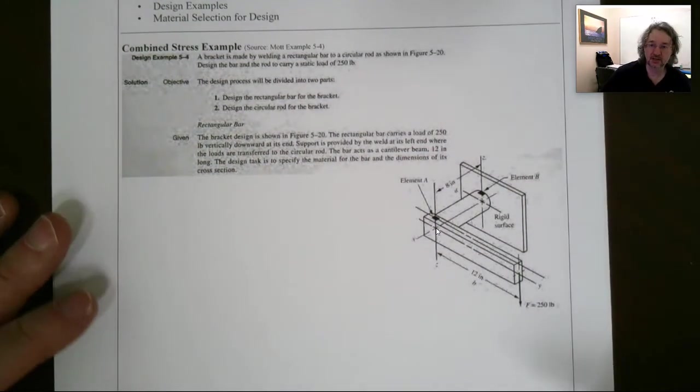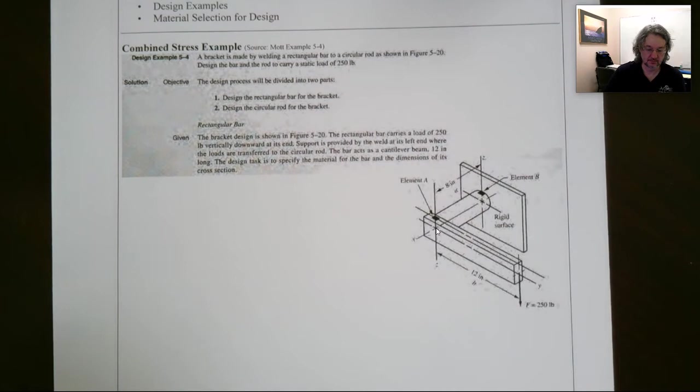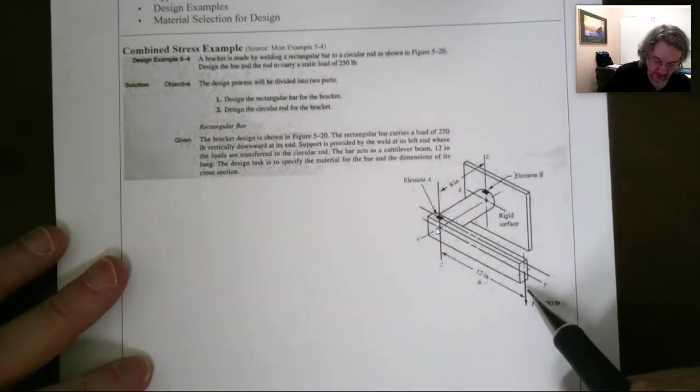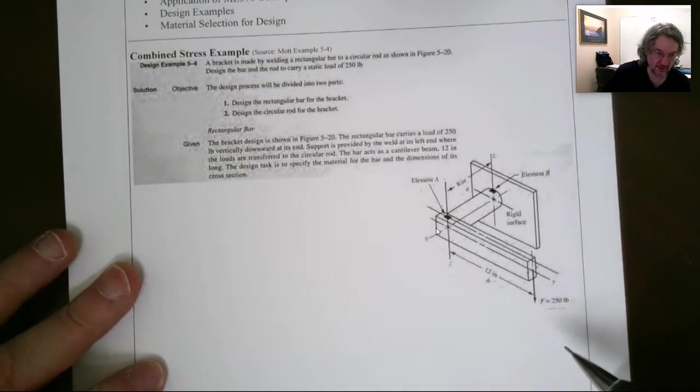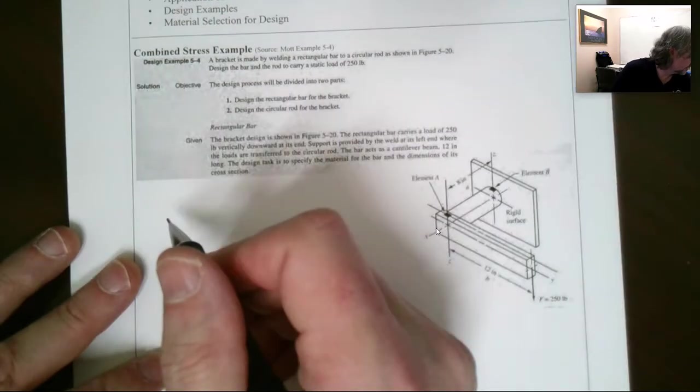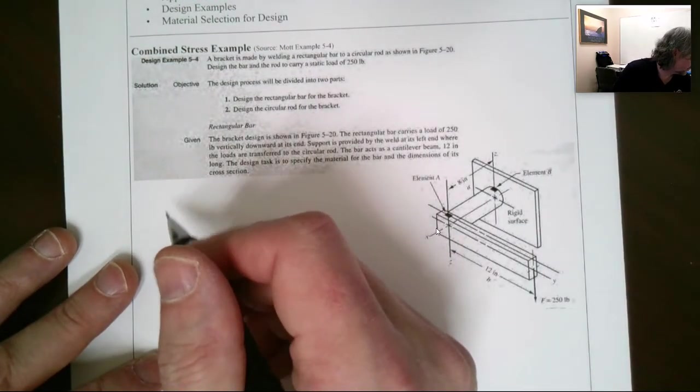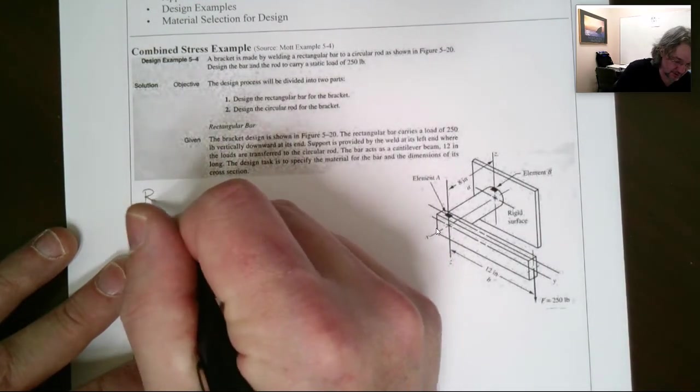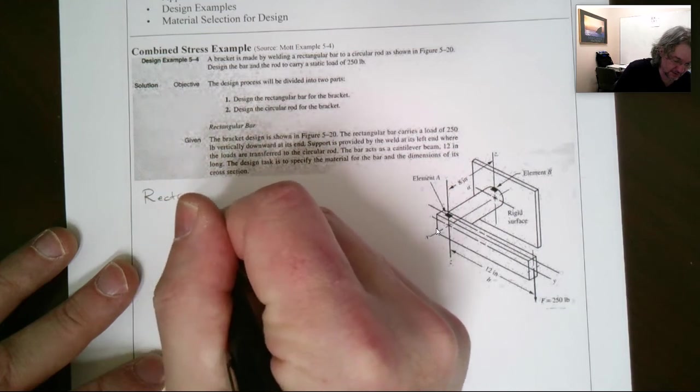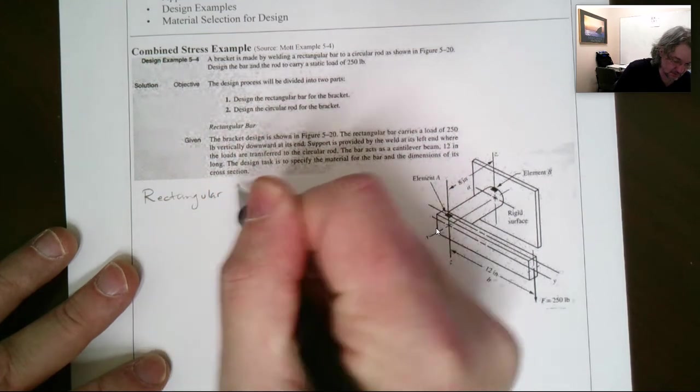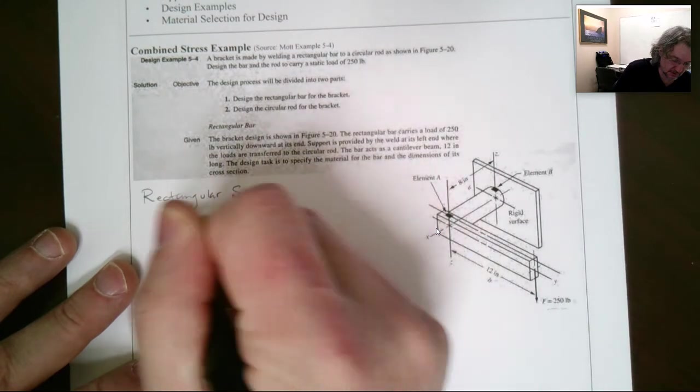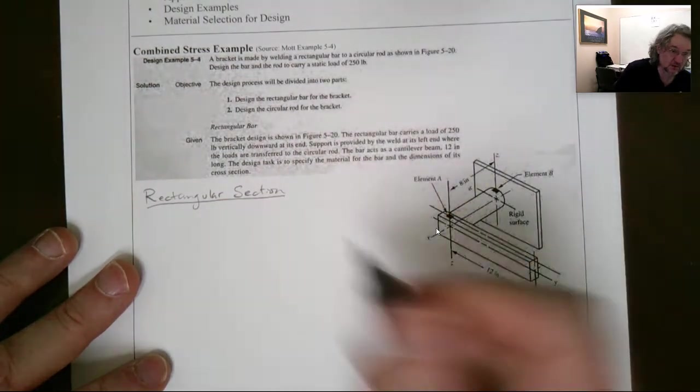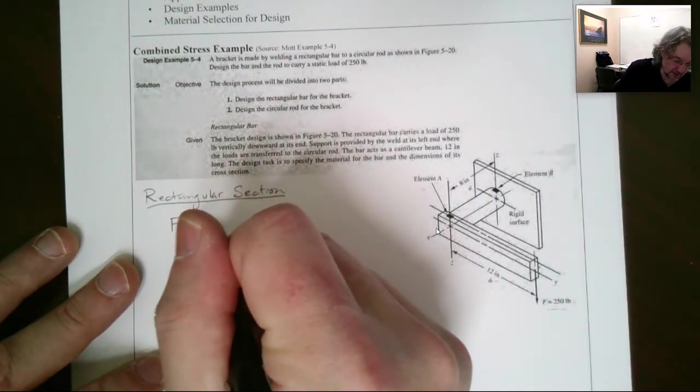First off, it's good to start with a free body diagram. So we can figure out what the loads are. Alright, so we were given what this load is of 250 pounds. So these are pretty straightforward and simpler ones. I'll start with the rectangular section design. And with an FBD.